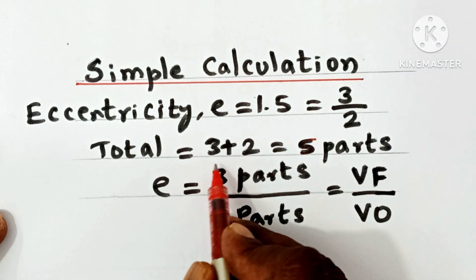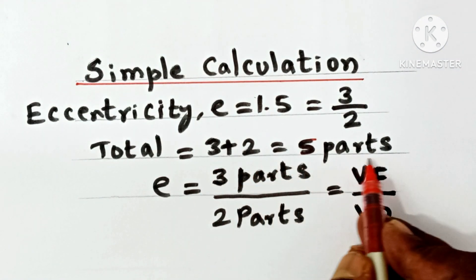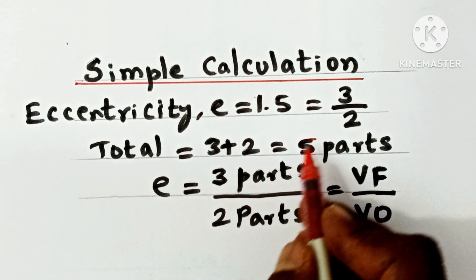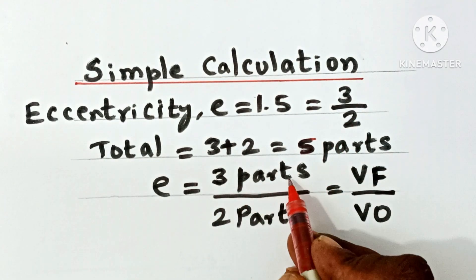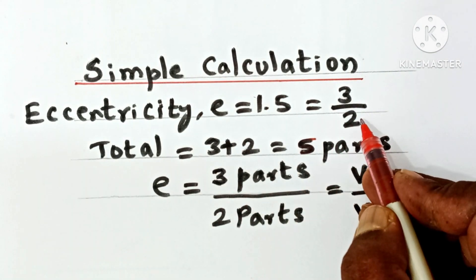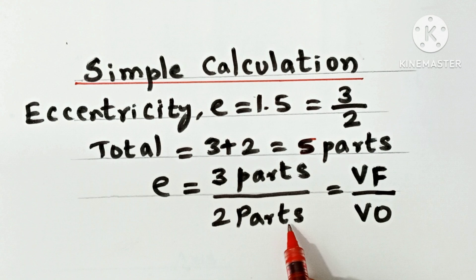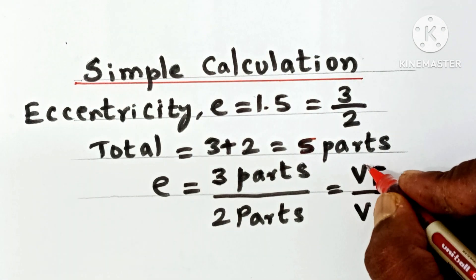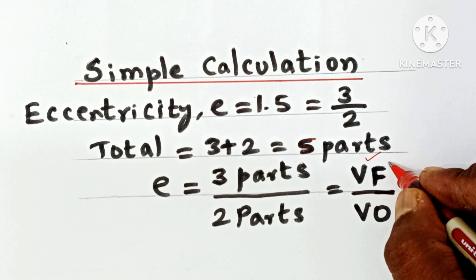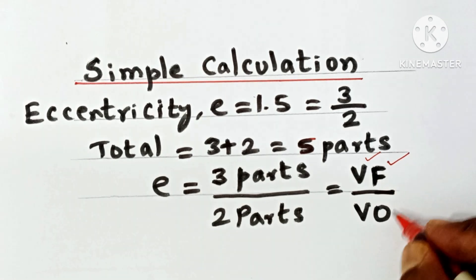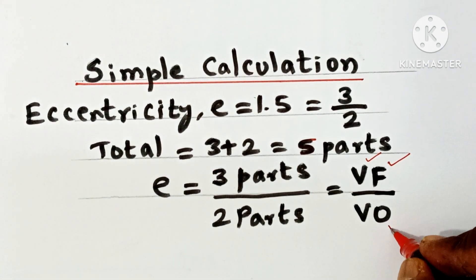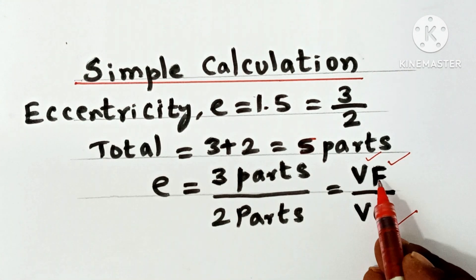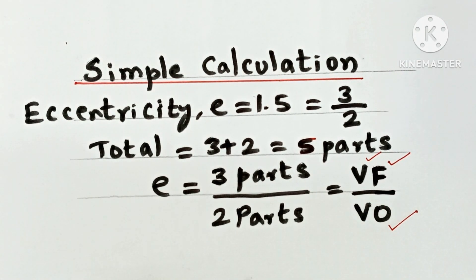Add the numerator and denominator to obtain 5 parts total. Eccentricity e equals numerator 3, so 3 parts; denominator 2, so 2 parts. The ratio VF by VO equals 3 by 2, where V stands for vertex, F stands for fixed point called focus, and O stands for the origin of the hyperbola. In the diagram, we have to mark V, F, and O.